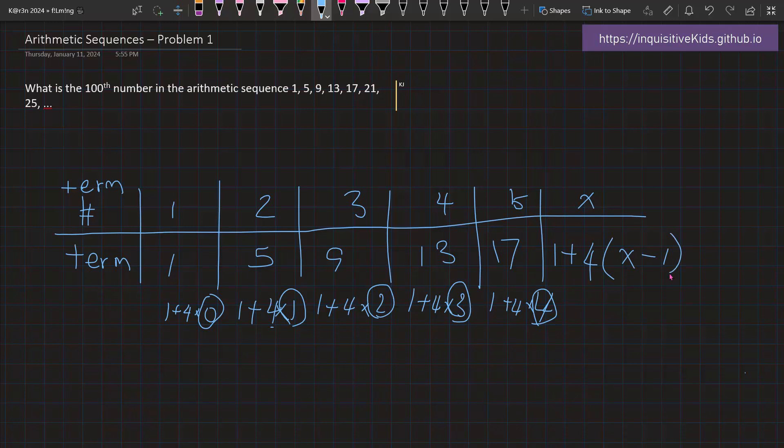So now, we can say, well, if we know that x is 100, if we know that the term number is the 100th number, then we can just substitute 100 into here, giving us 1 plus 4 times 99. That gives us 1 plus 396, which is equal to 397. So the 100th number in this sequence is 397.